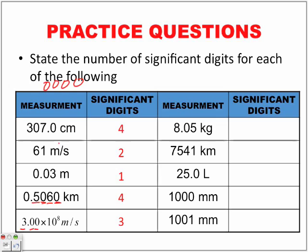Let's look at over here. 8.05 kilograms - real simple, three significant digits. Next one, 7541 - real simple, four significant digits.